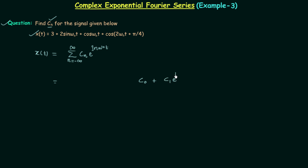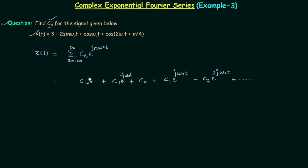When n is equal to 2 we will have C2 e raised to power j2 omega naught t, and similarly different terms up to infinity. When you put n equal to minus 1 you will have C-1 e raised to power minus j omega naught t. When n is equal to minus 2 you will have C-2 e raised to power minus 2j omega naught t, up to minus infinity. After comparison with this standard form we can easily find the different coefficients.